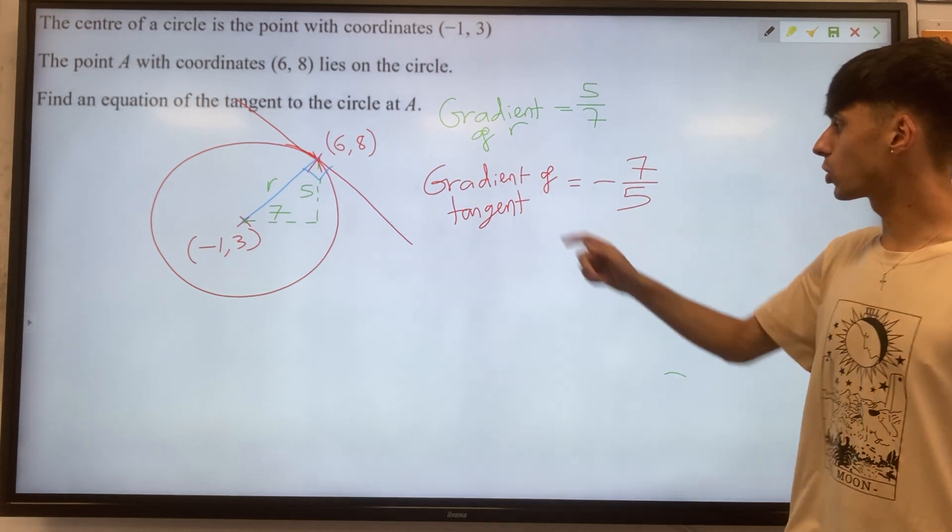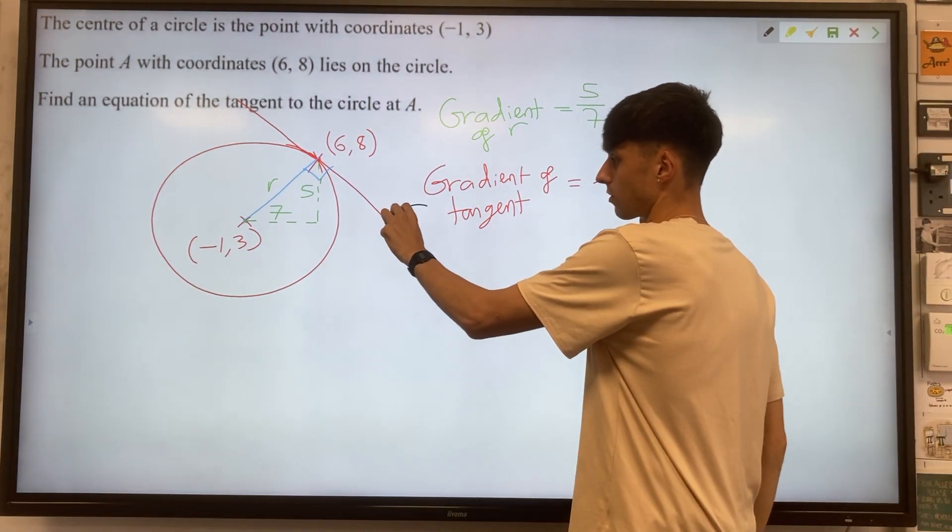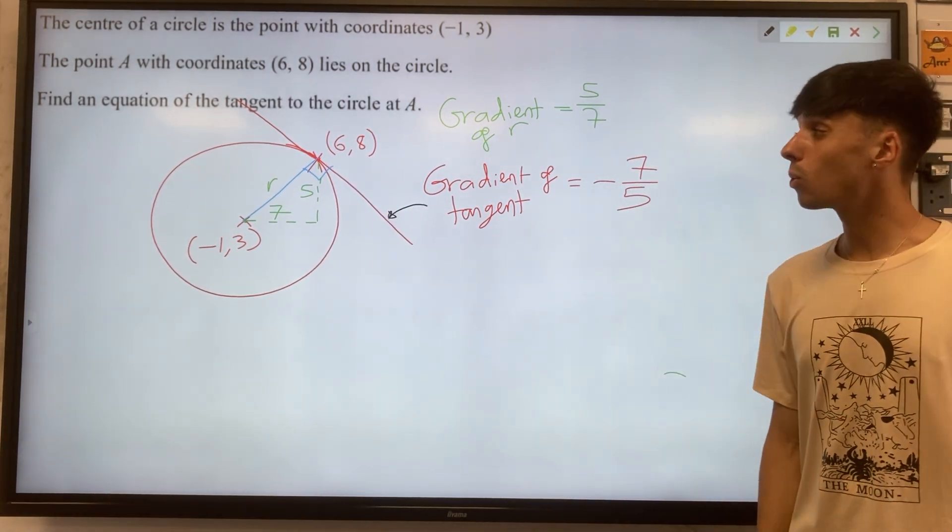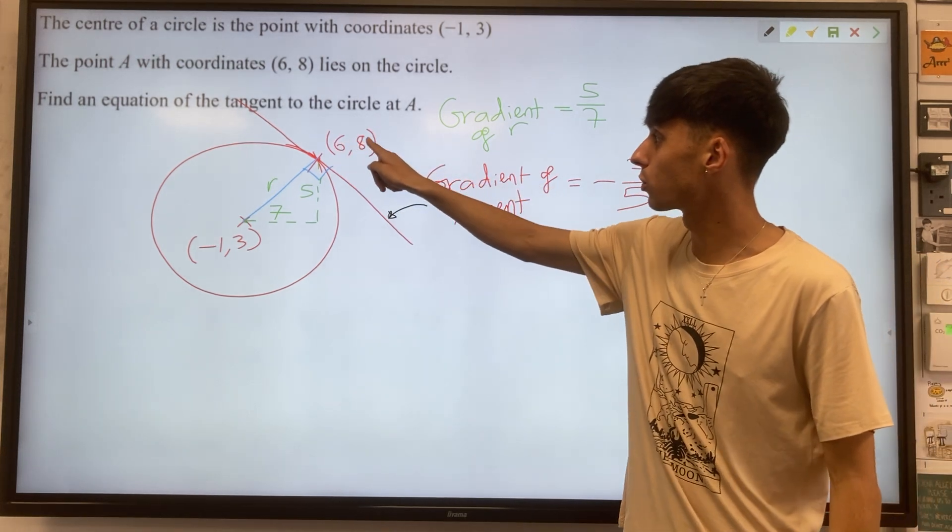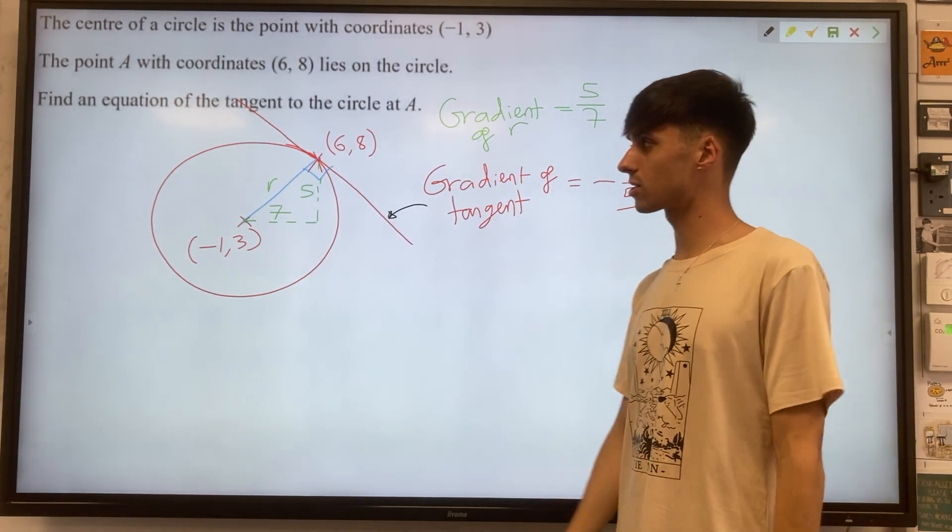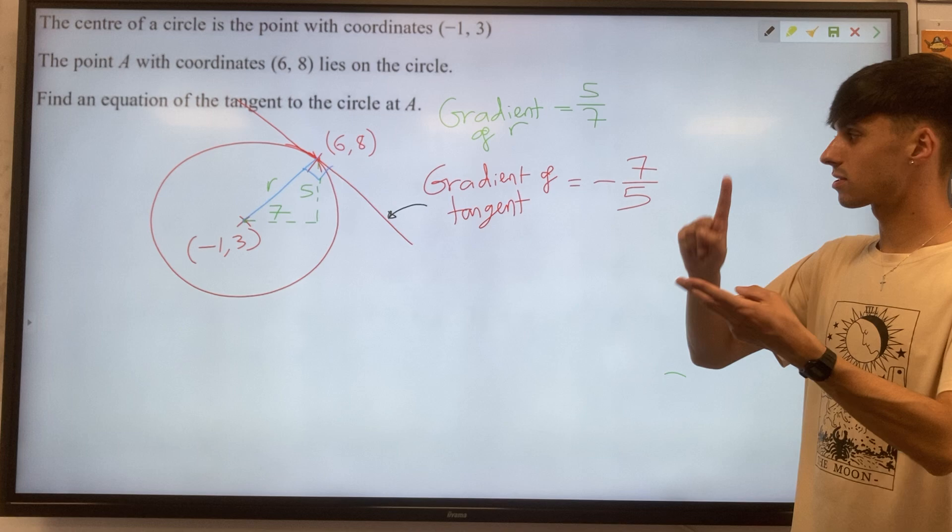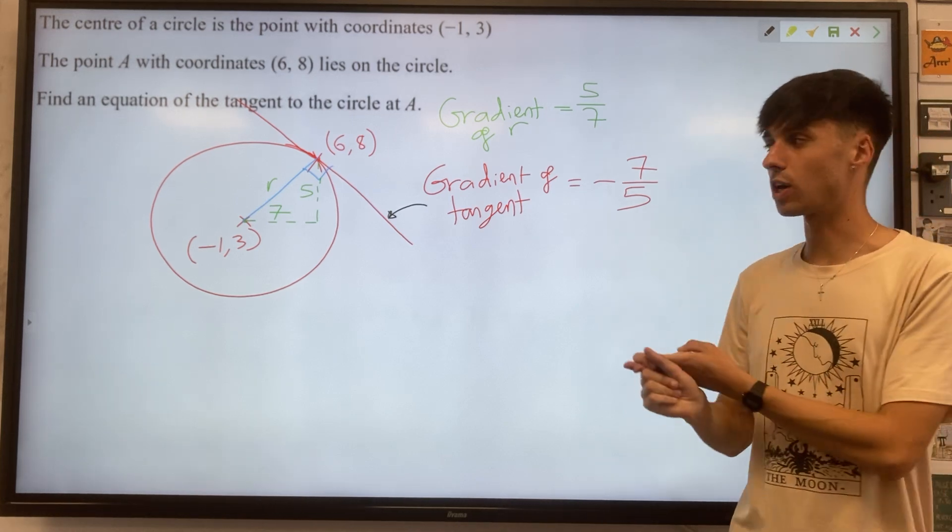Now we're there then, we know the gradient of the tangent is minus 7 over 5. We know also that the tangent must go through this point 6, 8. Now we have a point and a gradient, we can find the equation of the line.